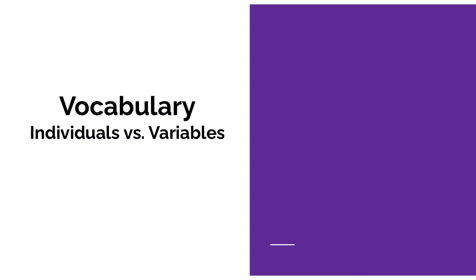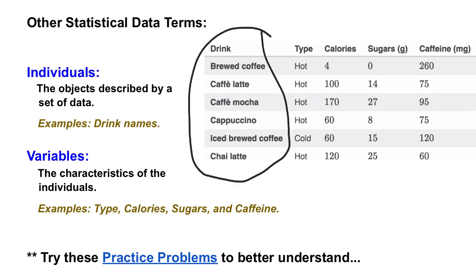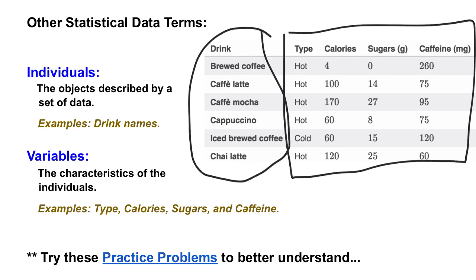Next, we're going to look at the difference between individuals and variables. Individuals are the objects described by a set of data. Looking at this chart, the individuals are the drink names — brewed coffee, cafe latte, cafe mocha, cappuccinos, iced brewed coffee, and chai lattes. Variables, on the other hand, are the characteristics of those individuals — things like what type of beverage is it, is it hot or cold, how many calories, how many sugars, how much caffeine. Those are all characteristics of those drinks, so those are called variables.